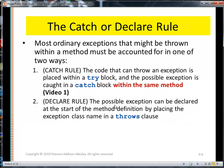So the catch or declare rule. Most ordinary exceptions that might be thrown within a method must be accounted for in one of two ways. First, the catch rule: the code that can throw an exception is placed within the try block, and the possible exception is caught in a catch block within the same method. The declare rule is the one we saw today with safe divide. The possible exception can be declared at the start of the method definition, by placing the exception class name in a throws clause.